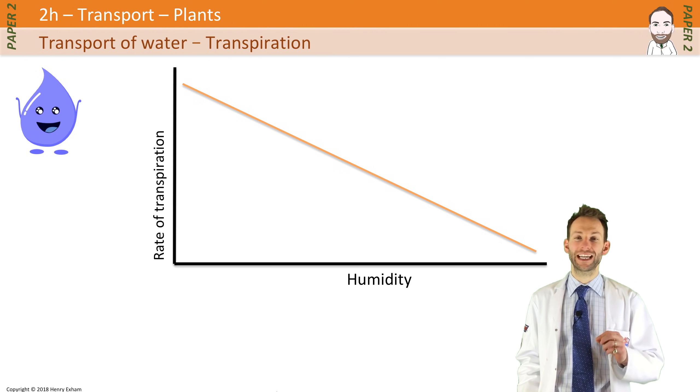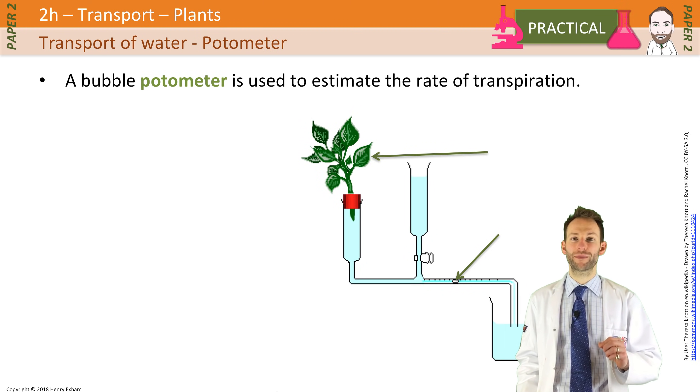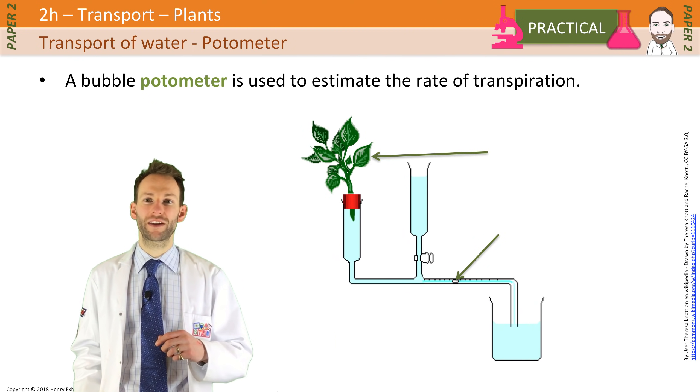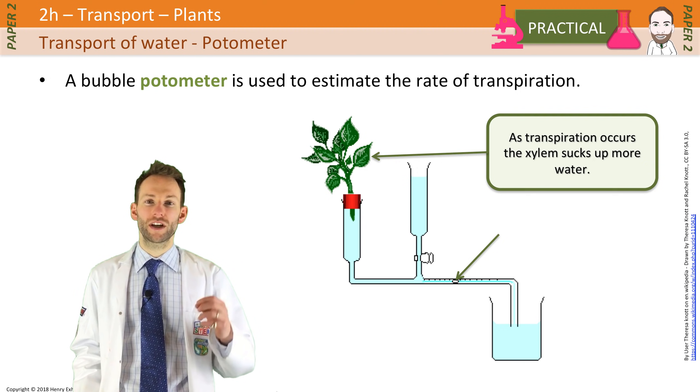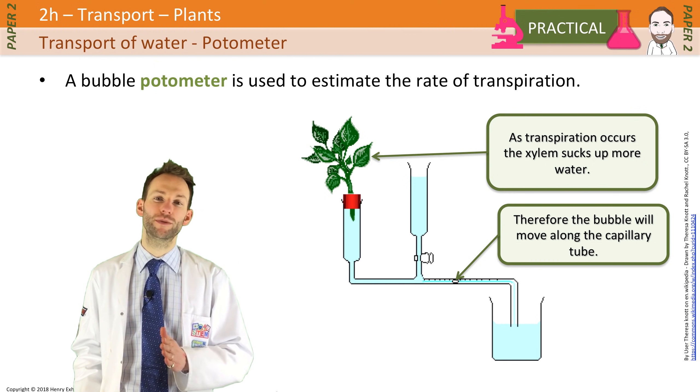Now you need to know specifically about a piece of apparatus called a potometer. It is a simple piece of apparatus that is used to estimate the rate of transpiration. Now transpiration happens in those leaves, in the shoot that is sticking out there, and as water is lost, more water will be drawn up. As it draws up more water, the little bubble that's been introduced into that capillary tube moves along.